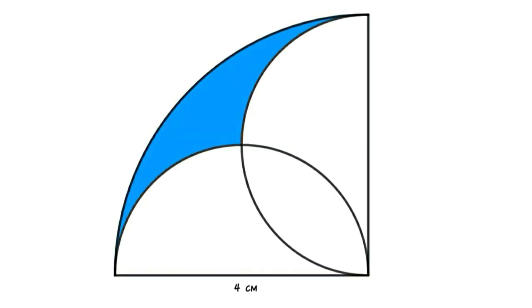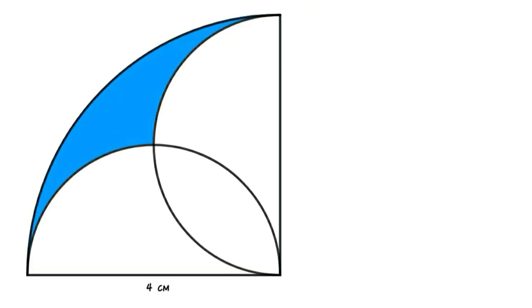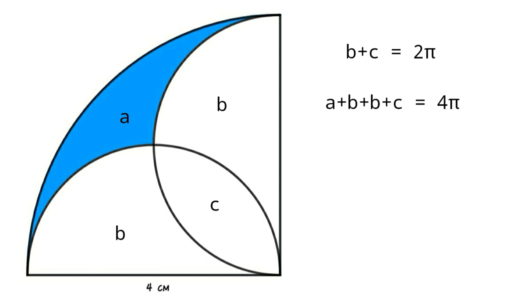Method 3: The figure is divided into 4 parts — let their areas be A, B, C, and D. From the figure, B equals D by symmetry. From the figure: B + C = 2π, and A + B + B + C = 4π. From these equations we get A + B = 2π. So A + B = B + C, which gives A = C — that is, the area of the blue shape equals the area of the red lens.